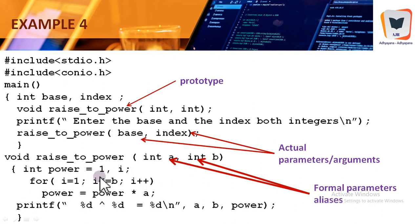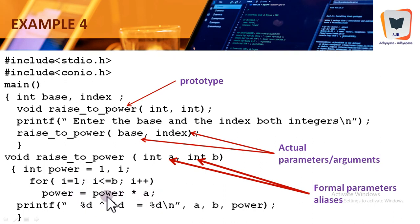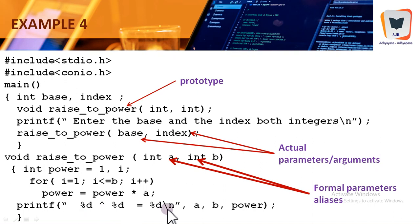Power is initialized to one and i runs from one up to b times, with power equal to power multiplied by a each iteration. For example, if a=2 and b=3, this computes 2×2×2 = a³. The result is printed with printf using %d to the power of %d equals %d, showing a, b, and the power value. Note that power is not returned — it is only printed inside the function.